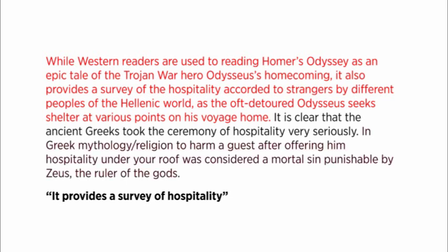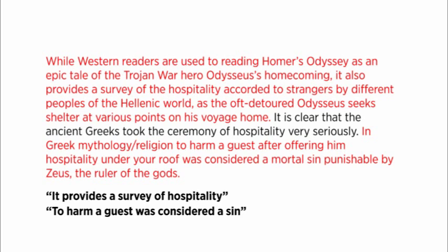If we apply the same type of analysis to the conclusion sentence, which we know is significant from our discussion of rhetoric, we can reduce it to: to harm a guest was considered a sin. Notice what we've done — we've extracted the two key ideas in clear language. This is not to say that you're going to ignore whatever else is in the paragraph or that the other language is irrelevant. What you are going to do is focus on and emphasize these two ideas. When you do that, everything else makes sense — you have a cognitive framework that organizes all that language for you and makes it clear and comprehensible.